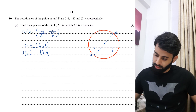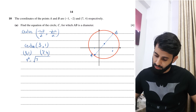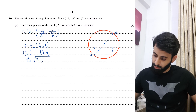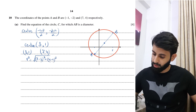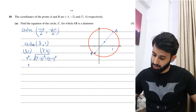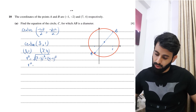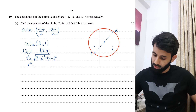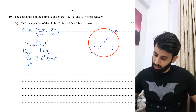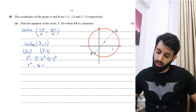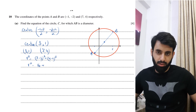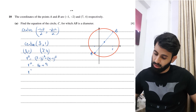So r squared equals (7 minus 3) squared plus (4 minus 1) squared. 7 minus 3 is 4, squared is 16. 4 minus 1 is 3, squared is 9. So r squared equals 25.